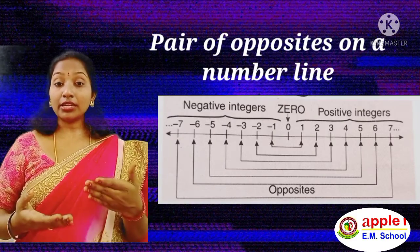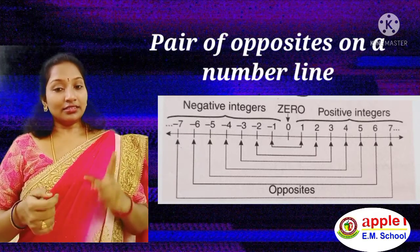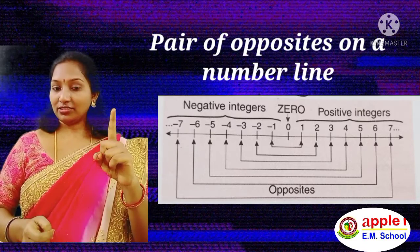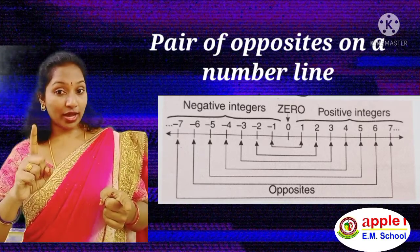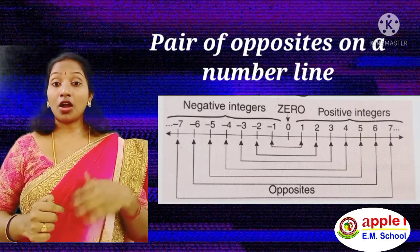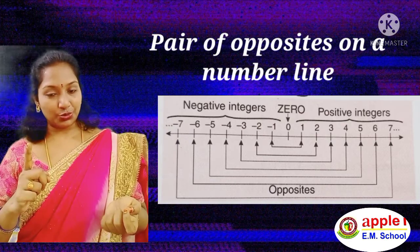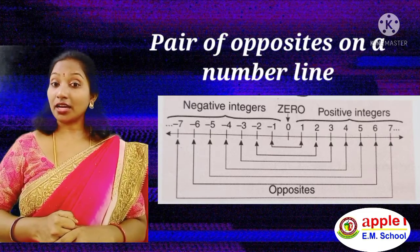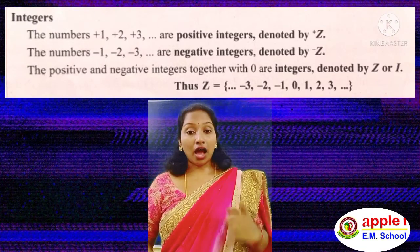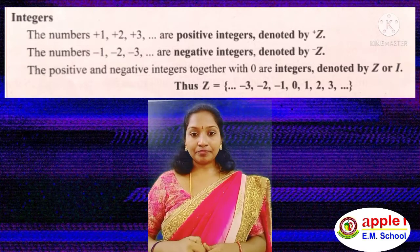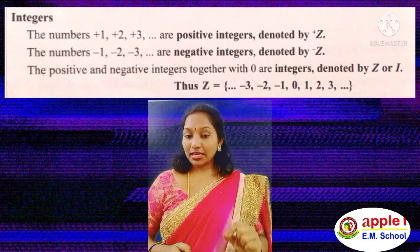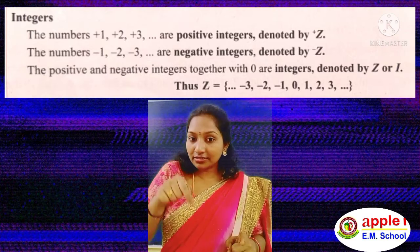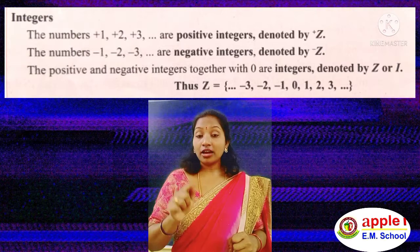Now let us see the pair of opposites on the number line. What is the opposite of minus 1? Opposite of minus 1 is plus 1. Opposite of minus 2 is plus 2. Opposite of plus 3 is minus 3. The positive integers are denoted by plus Z and the negative integers are denoted by minus Z. The positive integers and negative integers including 0 are denoted by Z or I.